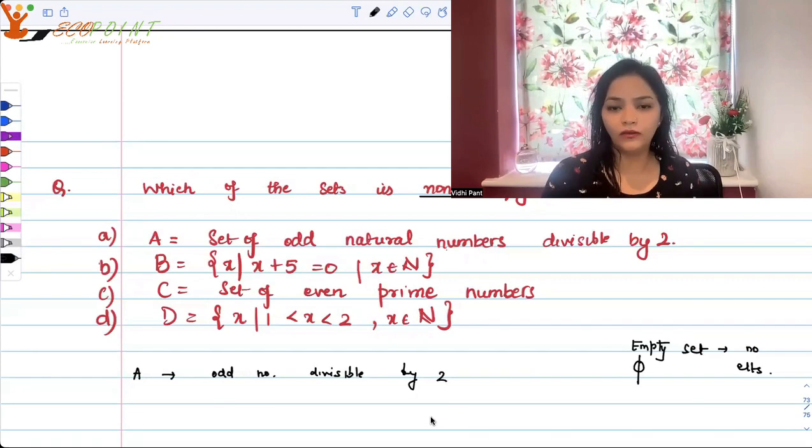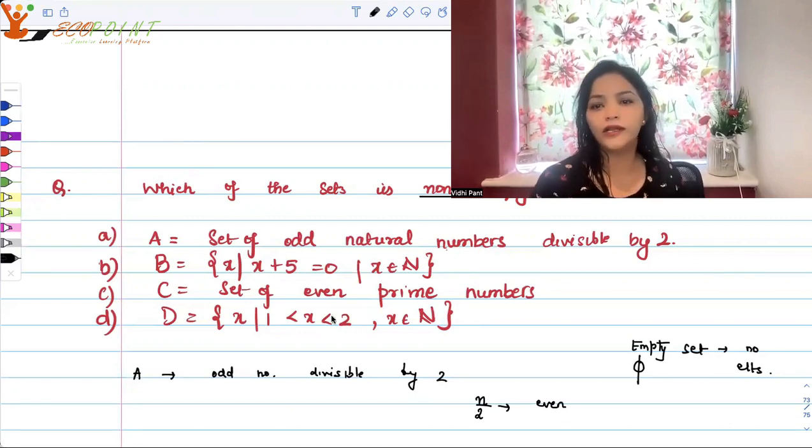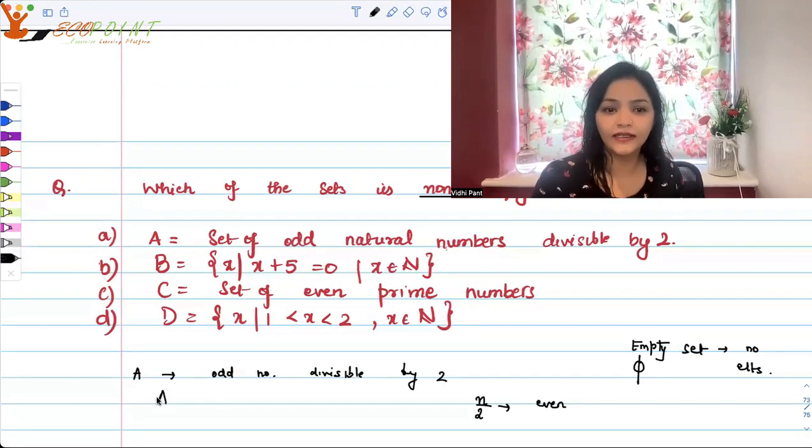In fact, how we denote even numbers is we denote any integer divisible by 2 is actually an even integer. Now an odd natural number, set of odd natural numbers divisible by 2, there won't be anything in this set. So A is actually empty.